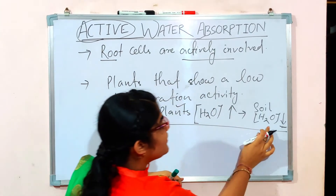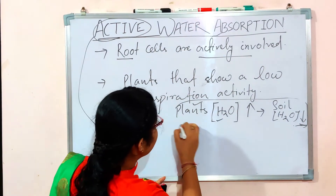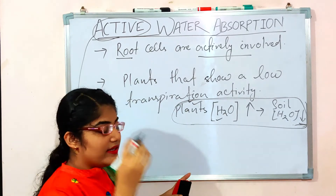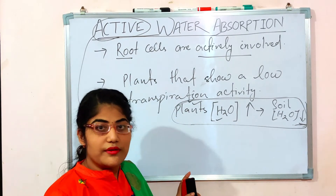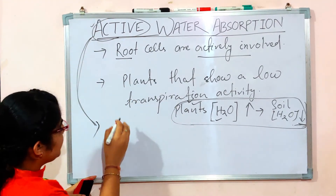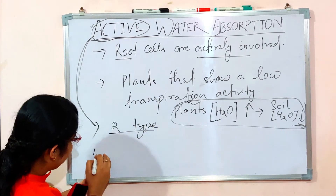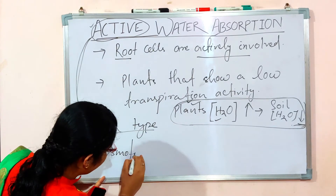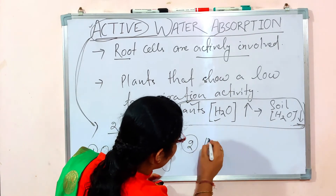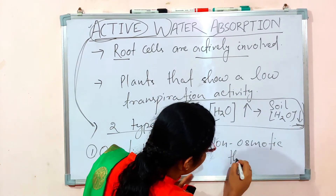So how can water move from a low concentration toward a higher concentration? We will discuss this particular point in today's class under the non-osmotic theory of absorption. The active water absorption mechanism is mainly divided into two types: the first is osmotic theory, or osmotic absorption, and the second is non-osmotic theory, or non-osmotic absorption.